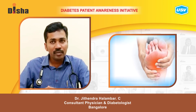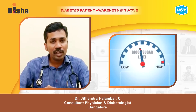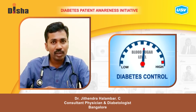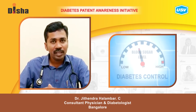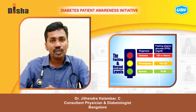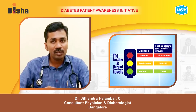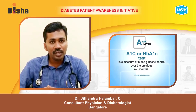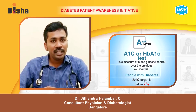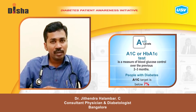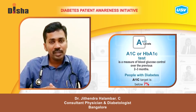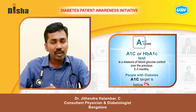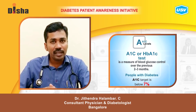The next main treatment is aggressive sugar control. Fasting sugar should be less than 130 mg/dL, post-meal sugar should be less than 160 to 170 mg/dL, and HbA1c should be less than 7%. By doing this, you can control peripheral vascular disease.